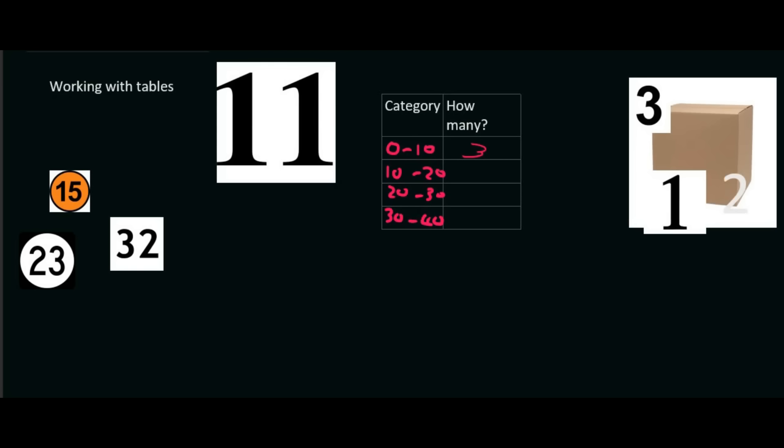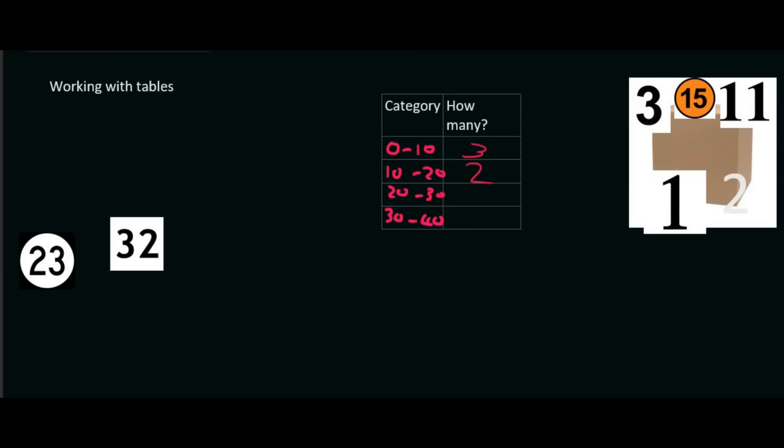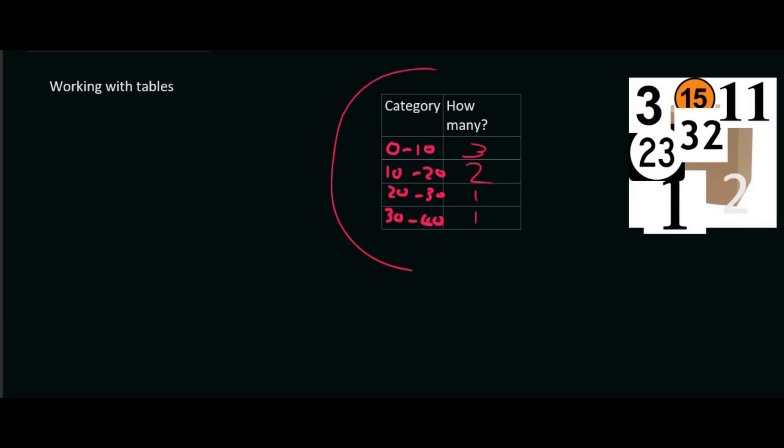The next category is the 10 to 20 categories. That's going to be the number 11 and the number 15. So how many are there? Two. We then go to the 20 to 30 category, and that's going to be this number over here. So there's only one of those. And then the number 30 to 40, well, there's only one of those.